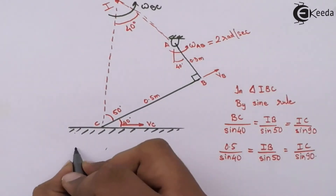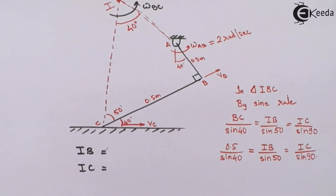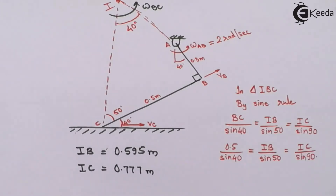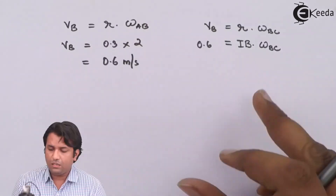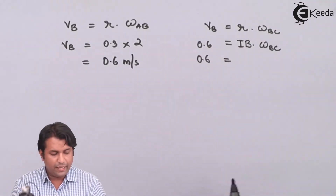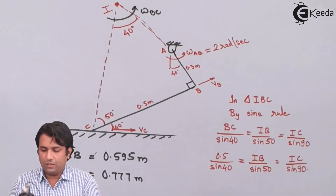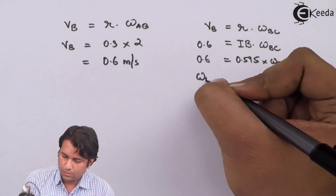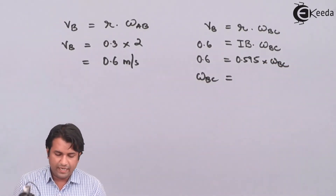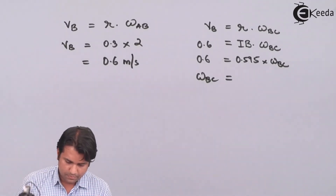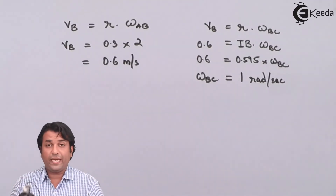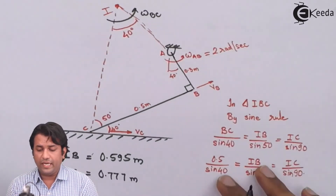From this relation I can get the values of IB and IC. VB equals 0.6, and the length IB I calculated is 0.595 meters. Substituting these into VB = IB × ω_BC, I get ω_BC as 1 radian per second. So I have now found the angular velocity for rod BC.